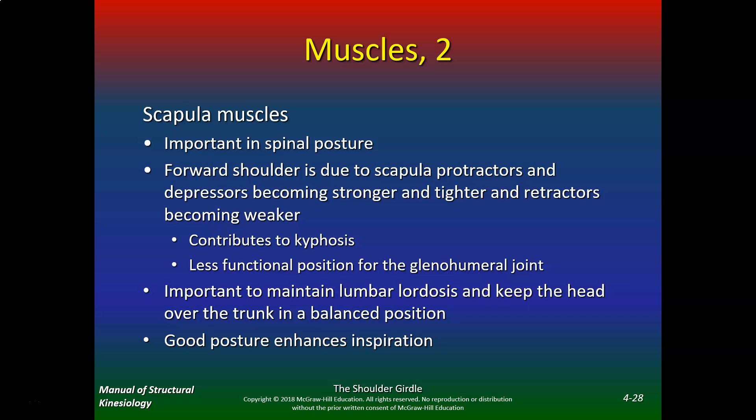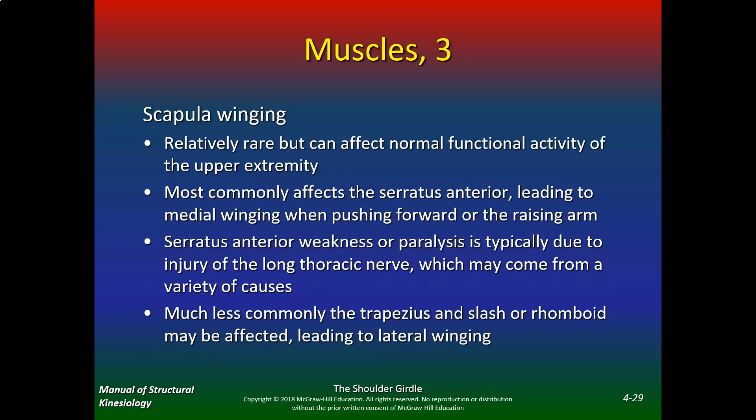Scapular muscles are important in spinal posture. Forward shoulder is due to scapular protractors and depressors becoming stronger and tighter, while retractors become weaker, contributing to kyphosis. This is a less functional position for the glenohumeral joint. It's important to maintain lumbar lordosis and keep the head over the trunk in a balanced position. Good posture also enhances respiration and inspiration.